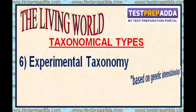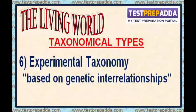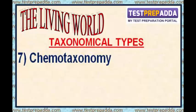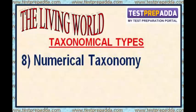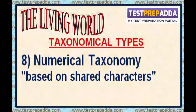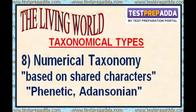Experimental taxonomy is based on experimental determination of genetic interrelationships. Chemo taxonomy is based on the chemicals present in cells or organisms. Numerical taxonomy is based on the number of shared characters of various organisms, and is also called Phenetic or Adansonian classification.